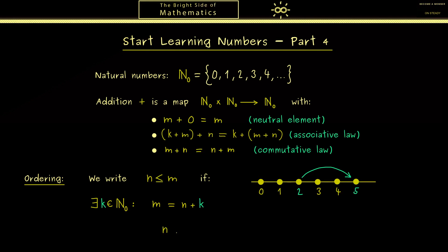And with this you can also immediately say what this strict inequality should mean. There we just want that n is less or equal than m and also that the numbers are not the same. So we have this condition and this condition.